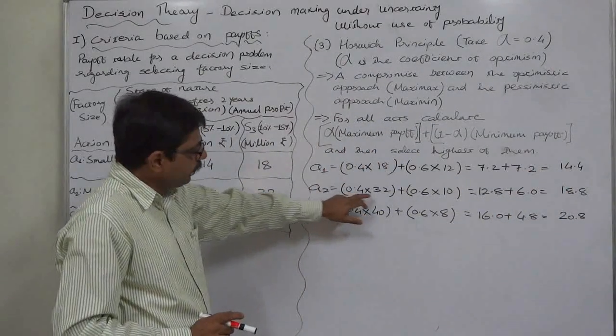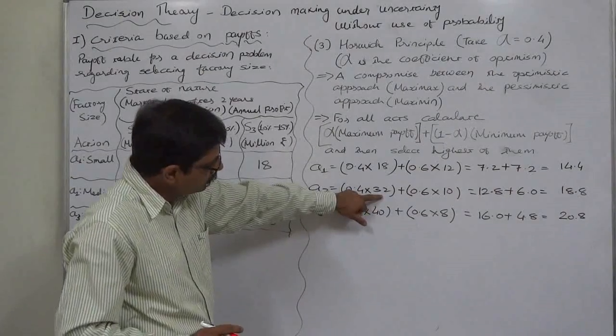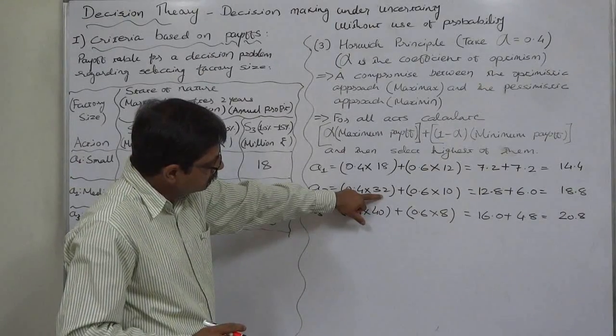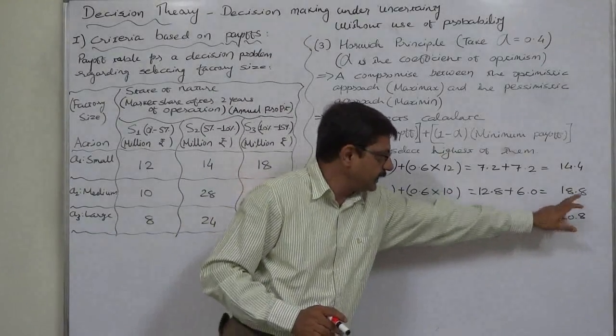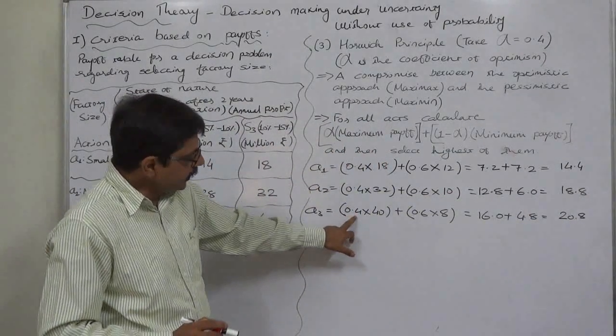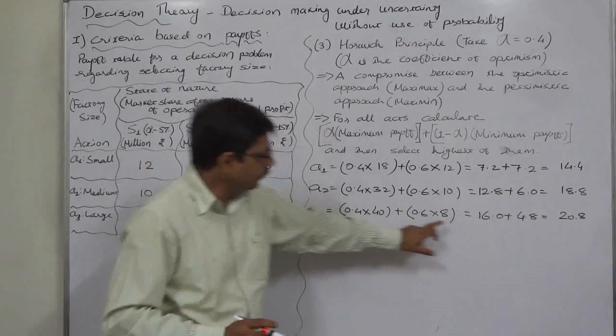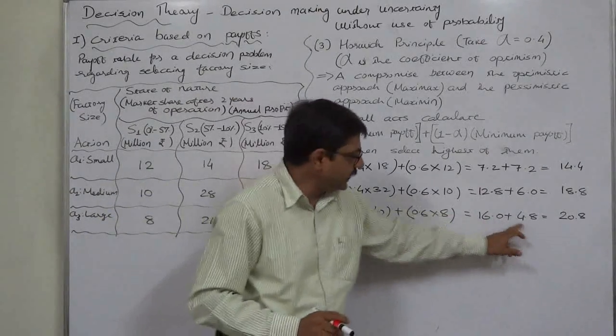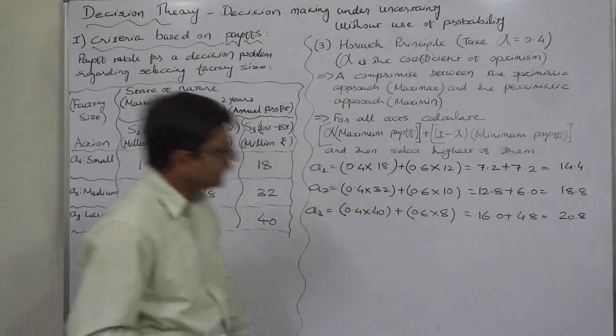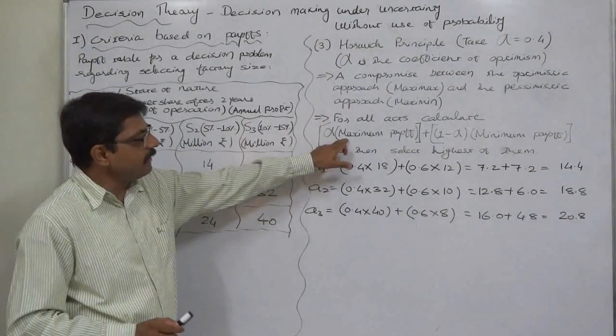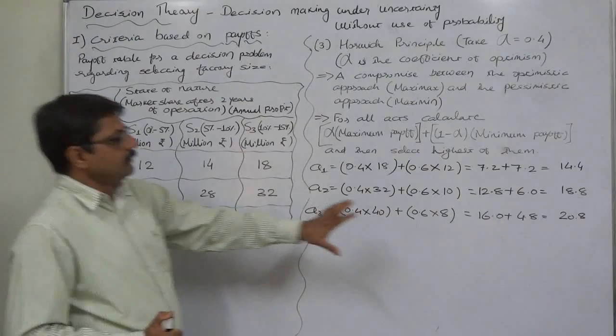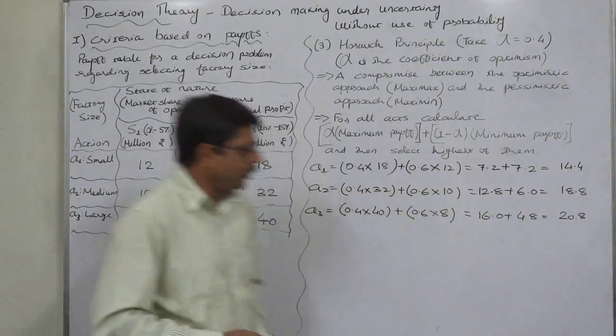Let's check them. For a1: 0.4 into 18 is 7.2, plus 0.6 into 12 is 7.2, total 14.4. For a2: 0.4 into 32 is 12.8, plus 0.6 into 10 is 6, total 18.8. For a3: 0.4 into 40 is 16, 0.6 into 8 is 4.8, total 20.8. This was the first step - applying this formula we calculated the expected payoff.